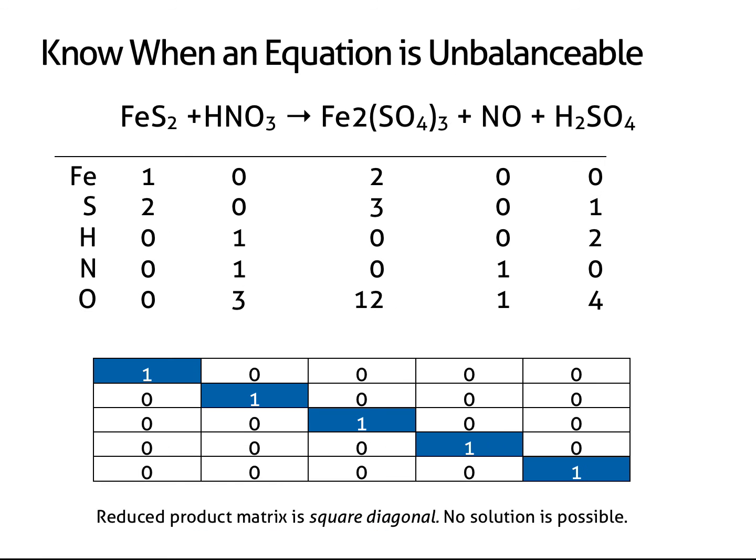Occasionally, you'll run into an equation that's unbalanceable. Fortunately, it's easy to tell when this is happening. A reduced composition matrix that is square and consists of a diagonal of ones is unbalanceable. The equation can only be balanced by adding reagents or products.